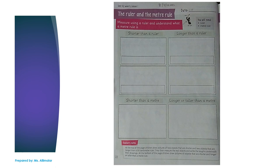At the top of the page, you can see the words 'shorter than a ruler.' There are two spaces for you to draw pictures. What I want you to do is draw two objects that are shorter, and then two objects that are longer than a 30 cm ruler. For 'shorter than a ruler,' just draw an object shorter than 30 cm.